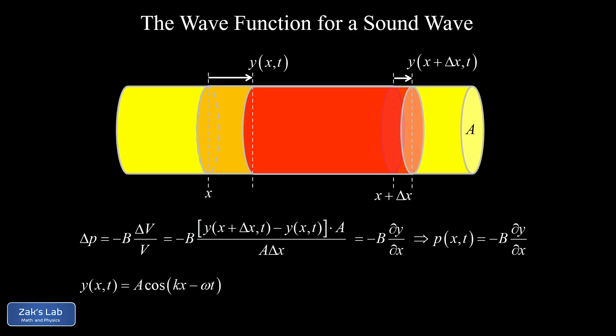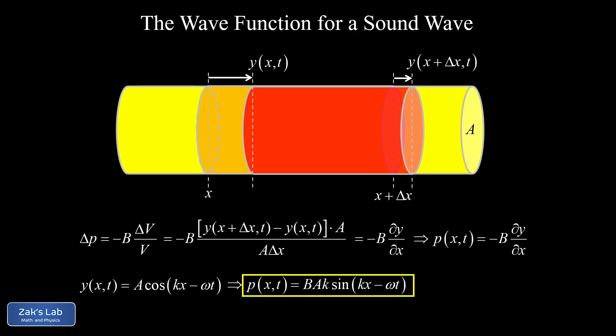Recalling that the displacement wave function is y = A cos(kx − ωt), we take the partial derivative with respect to x: differentiating the cosine gives a negative sine, and the chain rule produces a factor of k, so ∂y/∂x = −Ak sin(kx − ωt). Multiplying by the negative B out front, the minus signs cancel, and we end up with our pressure wave as a function of position and time: p(x, t) = BAk sin(kx − ωt). That's the main result of this video.